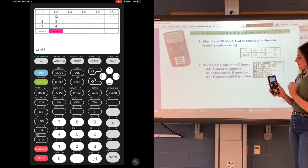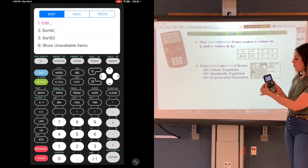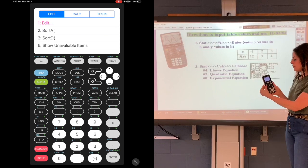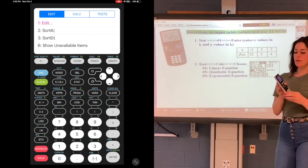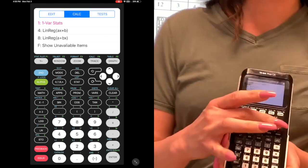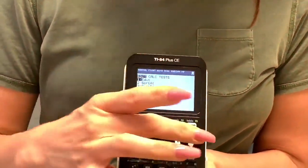You're going to go back to the stat button. And again, stat from y equals is down three to the right three. But this time we're going to calculate. So if you look to the right, there is a calculate feature. Let's go to the right.